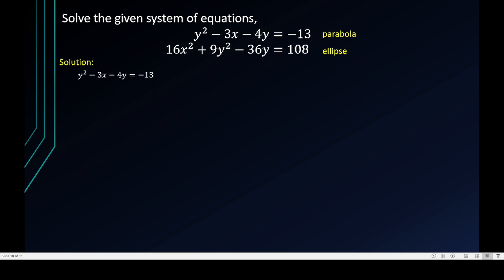Consider the parabola as equation 1 and the ellipse as equation 2. I will use the elimination method rather than substitution, as this is quite complex. I can focus on the y² term — notice that x cannot be eliminated because equation 1 has x to the first degree while equation 2 has x². So I focus on y. Multiplying equation 1 by 9 gives 9y² − 27x − 36y = −117.